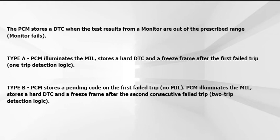Where type B failures are concerned, the PCM will store a pending code on the first trip but will not illuminate the MIL. If the problem occurs on the second consecutive trip, however, the PCM will store a hard code and command the MIL on. This is called two-trip detection logic.